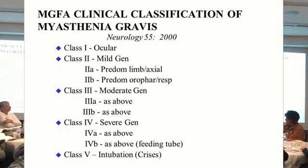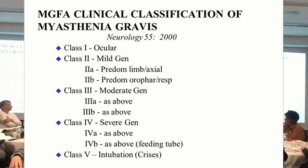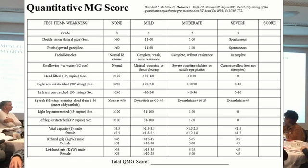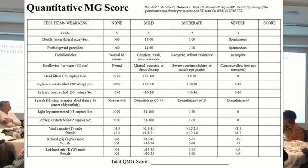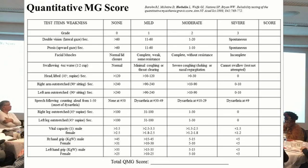Very simplistically: ocular is ocular — it stays ocular. If it's generalized, there's mild, moderate, severe, and then if you're on a ventilator it's crisis, or class V. Determining whether someone is mild, moderate, or severe is really up to the patient and the doctor — there's no firm criteria. Some generalized patients have weakness predominantly in the arms and legs, and some mainly in the swallowing and chewing muscles with normal strength in the arms and legs. That's what the A and B designations are for each group.